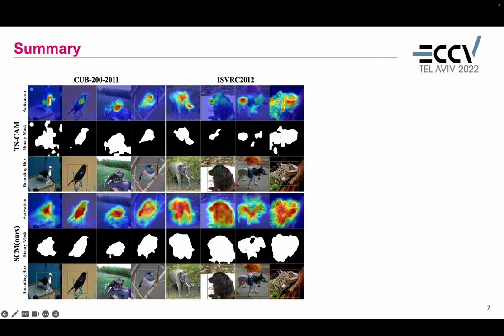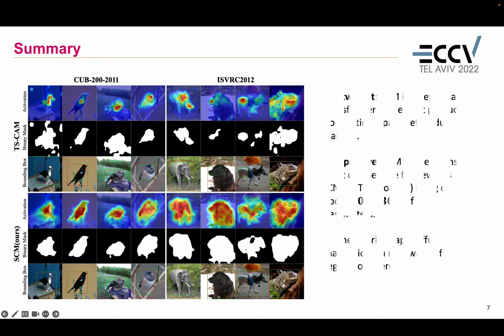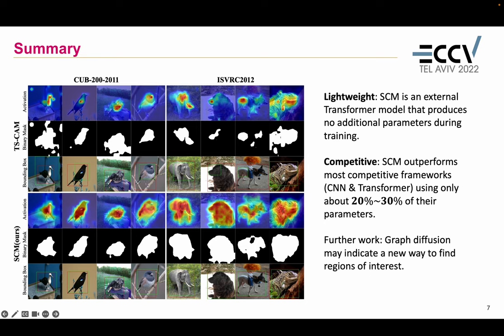In our experiments, we find that SCM successfully calibrates the attention of the Transformer to provide more meaningful results. It is lightweight as it is an external module that produces no additional parameters during inference, and is very competitive, outperforming most frameworks using only about 20-30% of their parameters. Finally, we believe graph diffusion may indicate a new way to find regions of interest or improve attention mechanisms. Please contact us if you have further interest.